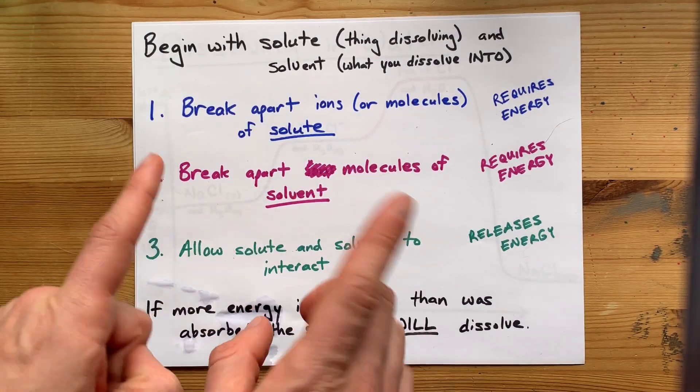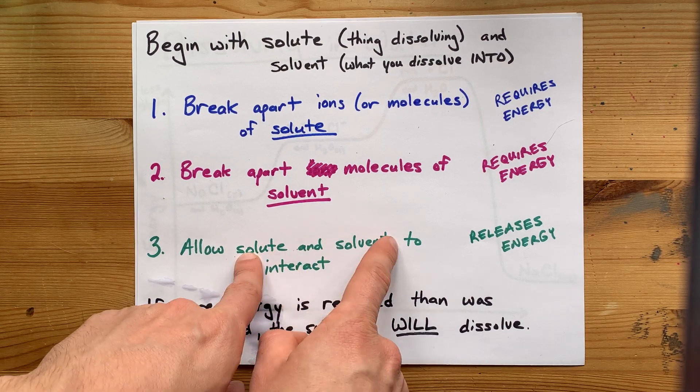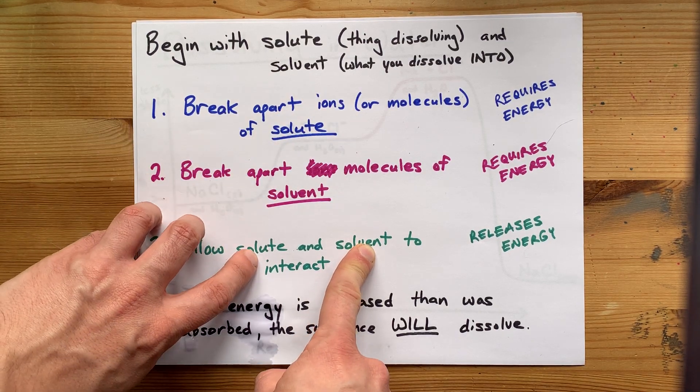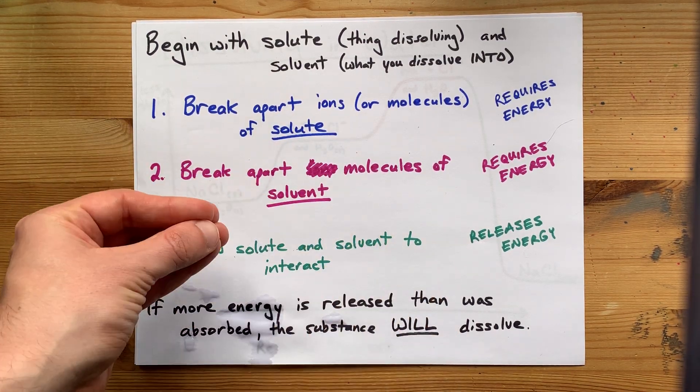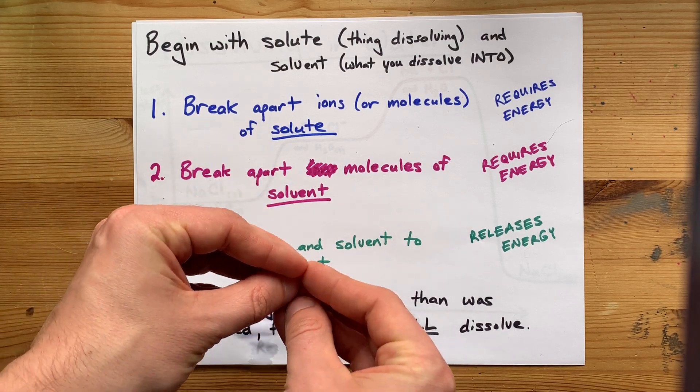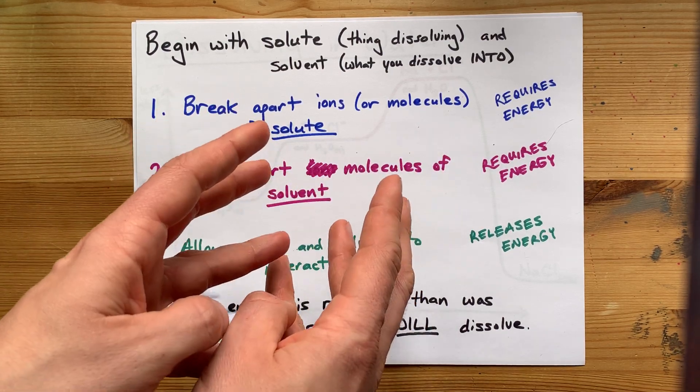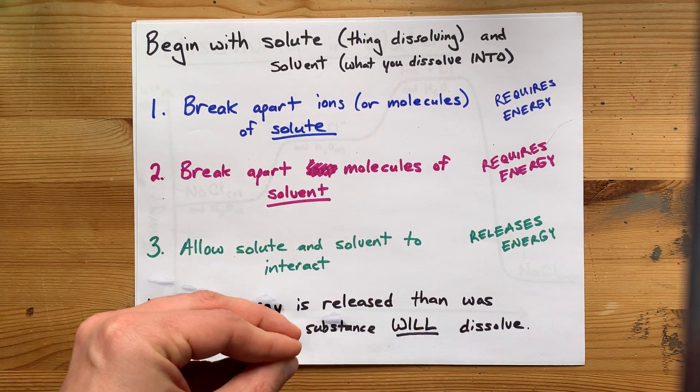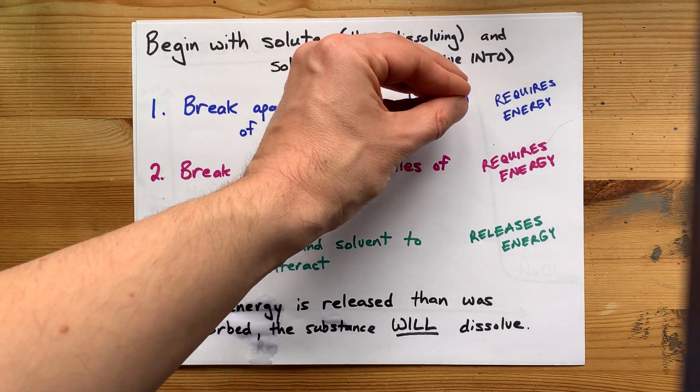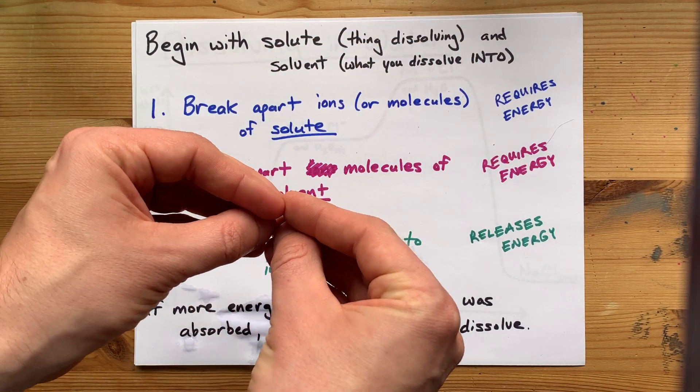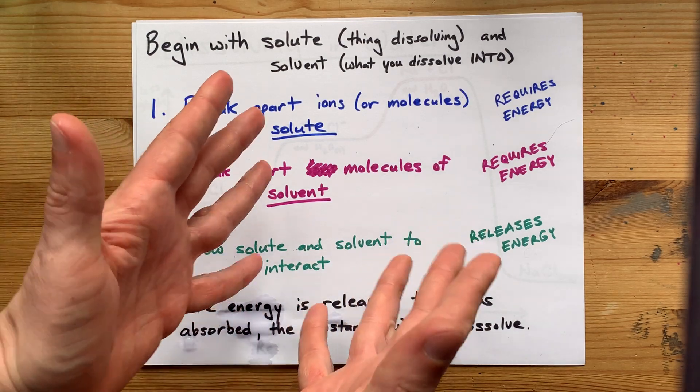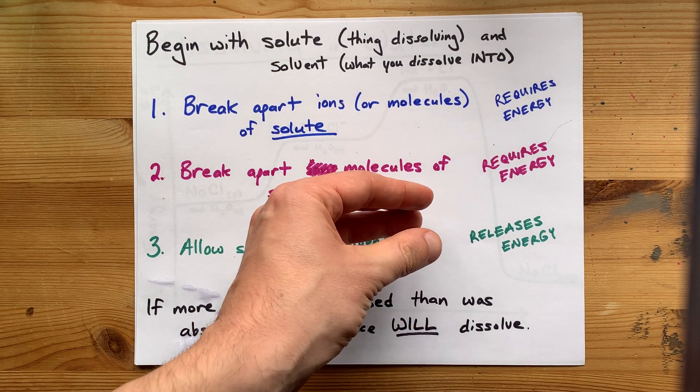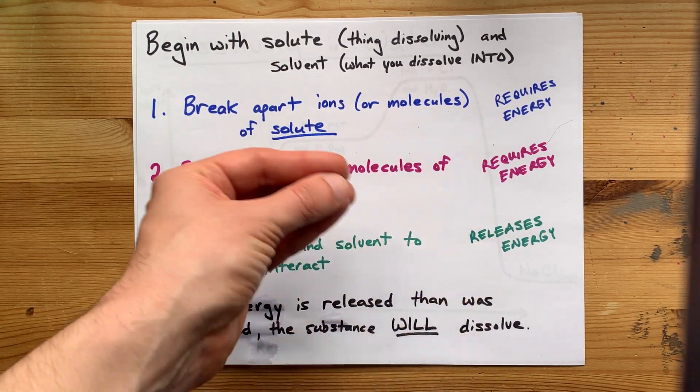But the payoff is that when you mix the solute and solvent—the solute broken apart into ions or molecules, and the solvent with little pockets already made—when those interact, you can get intermolecular forces and stuff, attractions between each other, and that process releases energy. So some energy is required up front to get these things to break apart from each other. But when they mix back together, if they are attracted to each other enough, they release enough energy to make it dissolve.